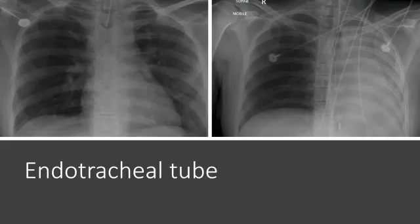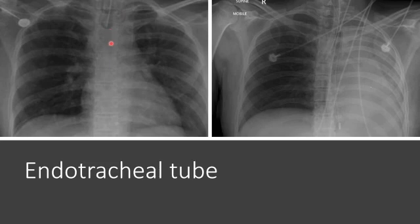The most important tube on the chest x-ray is the endotracheal tube. On the first image you can see an appropriately placed ET tube — it should be about five centimeters above the carina, plus or minus two centimeters, so find the carina and measure from there. On the second image, the endotracheal tube was placed into the right main bronchus, resulting in complete collapse of the left lung.